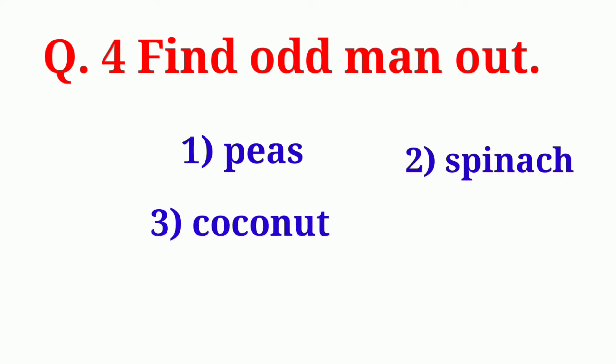Our next question is, Find Odd Man Out. The options are, Peas, Spinach, Coconut, Brinjal.